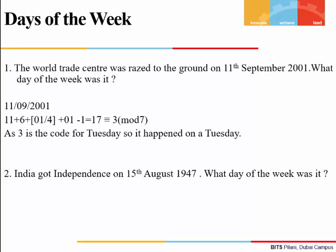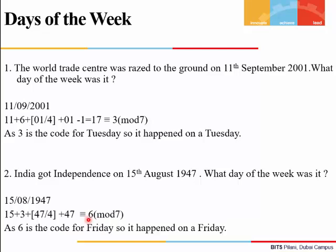Example 2: India got independence on 15th August 1947. Here d = 15, m = 3 (August's code), y = 47, ⌊47/4⌋ = 11, and since the year is in the 1900s, c = 0. The total is congruent to 6 mod 7, and since 6 is the code for Friday, the day of the week was Friday.